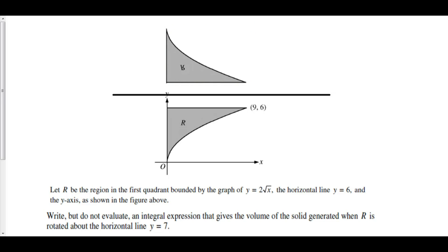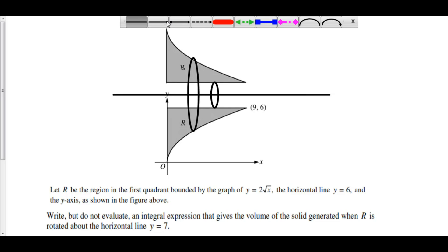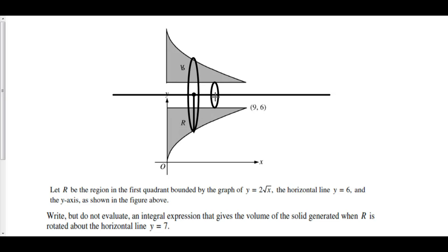Let's create a flipped image of R on the other side of y equals 7. We can create our larger radius — our larger circle is going to go from R to R. And our smaller radius will go inside of this empty region. Here is our larger radius, and our smaller radius is right here.